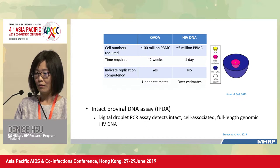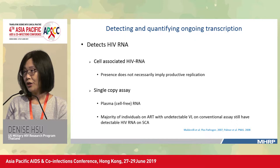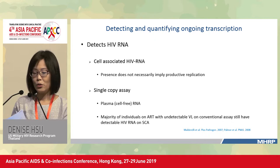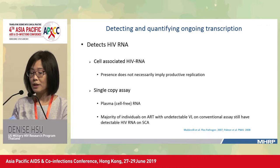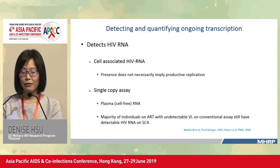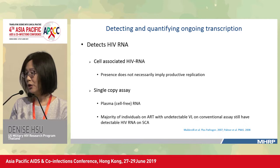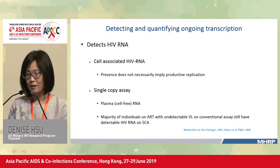There is also ongoing transcription and viral production whilst on ART with plasma viral suppression. We can detect this through cell-associated HIV RNA, though its presence does not necessarily imply productive infection. Alternatively, the single-copy assay measures plasma cell-free RNA or virions. It is important to remember that the majority of individuals on ART with undetectable viral load on conventional commercial assays still have detectable HIV RNA on single-copy assays.